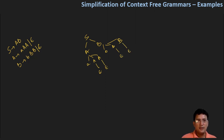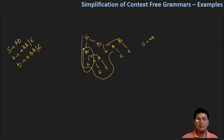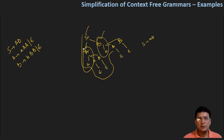You can see that S is giving us the string A, B. A is also giving us some terminal symbol. B is also giving us a terminal symbol. So the productions with S, A, and B are well-formed productions, and we will use these productions.